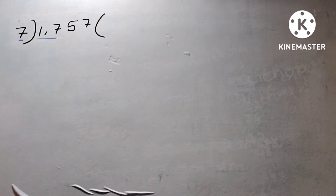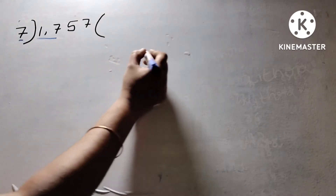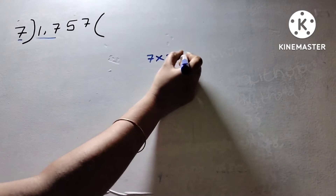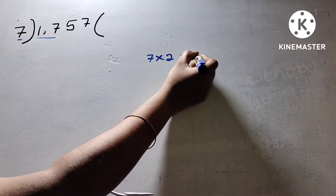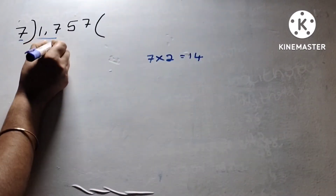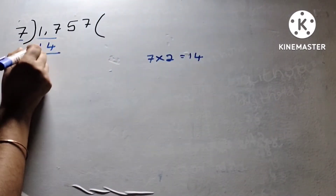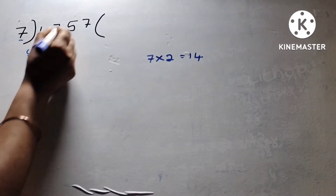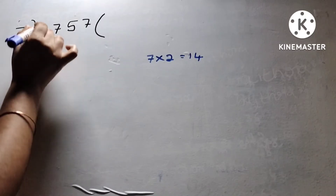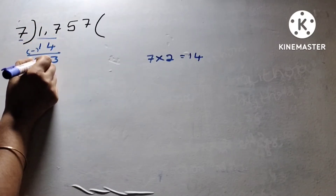7 goes into 17: 7 times 2 is 14. 17 minus 14 is 3. Bring down: 3, 1, 1, 0.